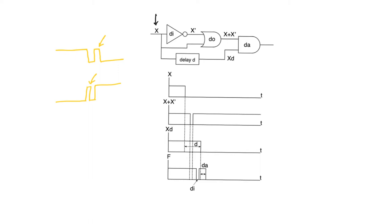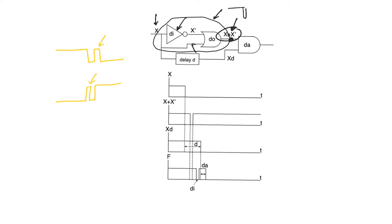The second condition for a dynamic hazard to occur is that there is a static hazard embedded within it. If you observe these two gates — the OR gate and the inversion — these two gates actually form a static hazard. This is a static 1 hazard: the value at this internal node is supposed to be 1, but because of the differential delay through the path of X and X̄, the value of X + X̄ temporarily drops down to 0, giving us a glitch.